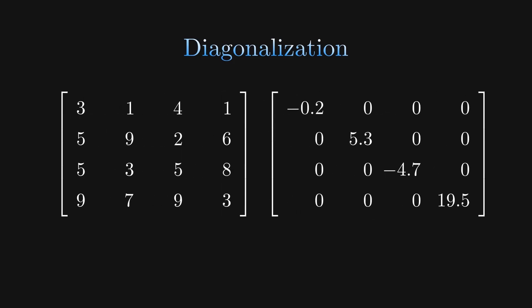Diagonalization is a process that allows us to perform incredibly large computations almost instantaneously. Given a square matrix of numbers, sometimes it's possible to change it into a matrix with only diagonal entries.